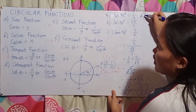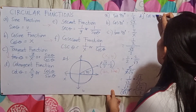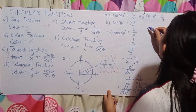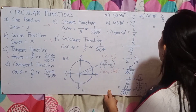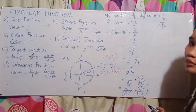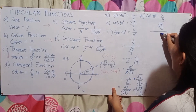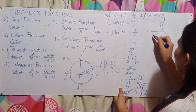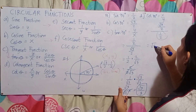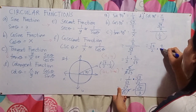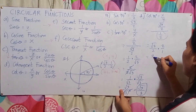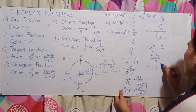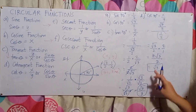Letter D is cotangent 30 degrees. The formula is x over y, so the value of x is √3/2 divided by 1/2. Take the reciprocal of 1/2 to get 2/1, then multiply: √3/2 times 2/1 equals 2√3/2. The 2s cancel out, so cotangent 30 degrees equals √3.